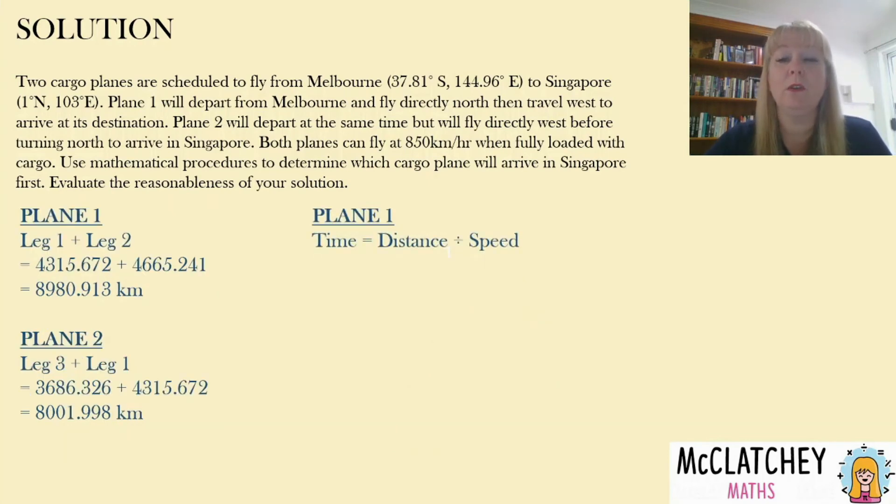Okay so if we recall that time is equal to distance divided by speed, well then I take my 8,980 and I divide it by that common speed of 850 kilometers an hour and I know plane one's going to take 10.57 hours. Now a lot of people make the mistake of thinking that's 10 hours and 57 minutes, it's not, it's 0.57 of an hour which is a lot closer to a half an hour than it is to another hour, so we take that 0.57 and multiply it by 60 and we get 34 minutes.